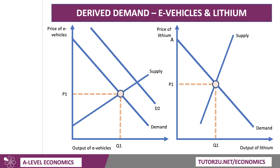If the demand for e-vehicles goes up — which, of course, it is, particularly as corporates move towards e-vehicles and as people's incomes allow them to buy these products — demand shifts out to D2. That causes an increase in the equilibrium price of e-vehicles, but also, critically, an increase in the quantity supplied. So the level of production will go up.